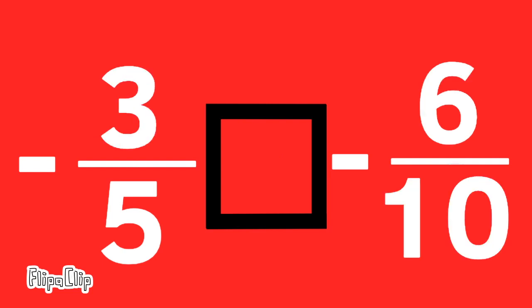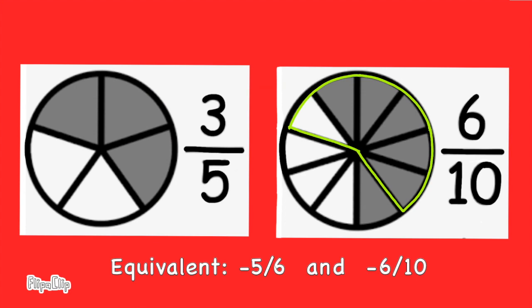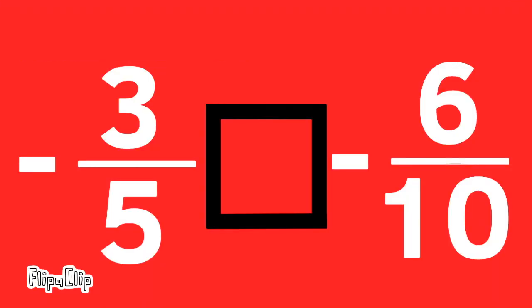Negative 3 fifths compared to negative 6 tenths. These are equivalent fractions, so negative 3 fifths is equal to negative 6 tenths.